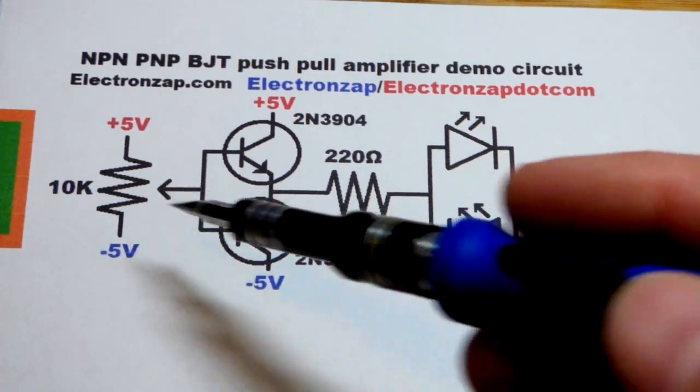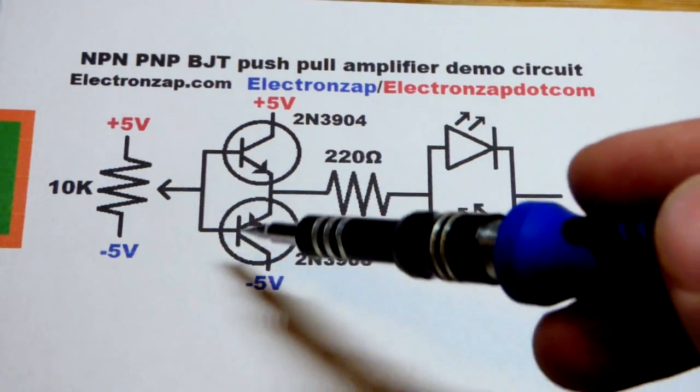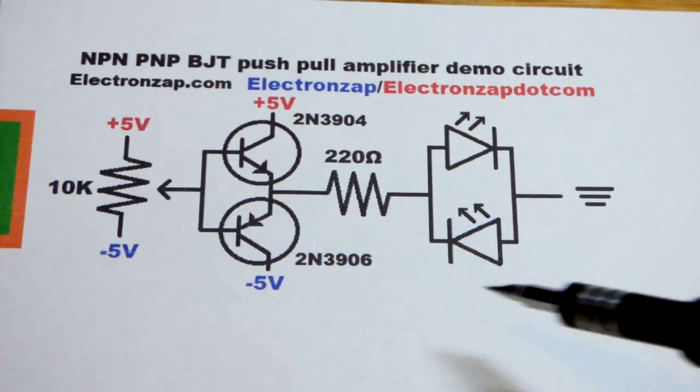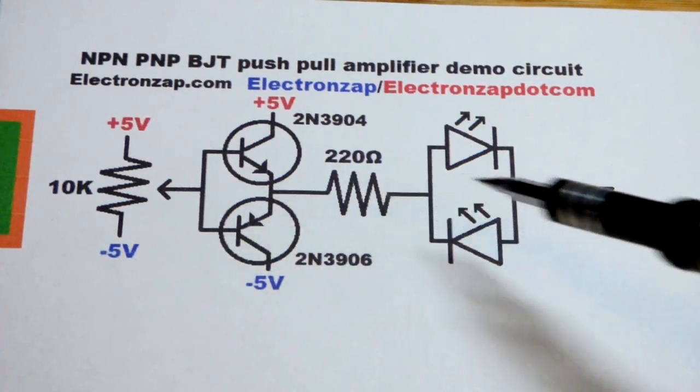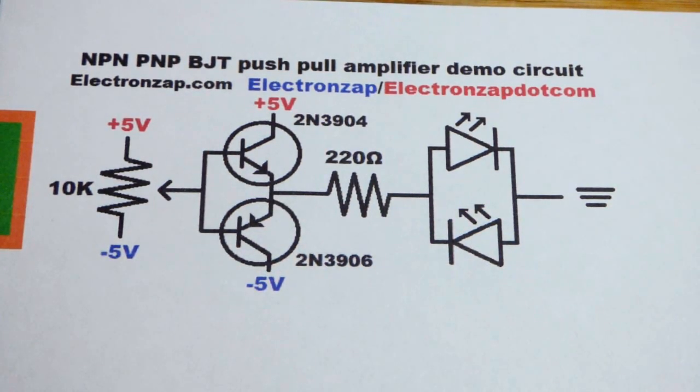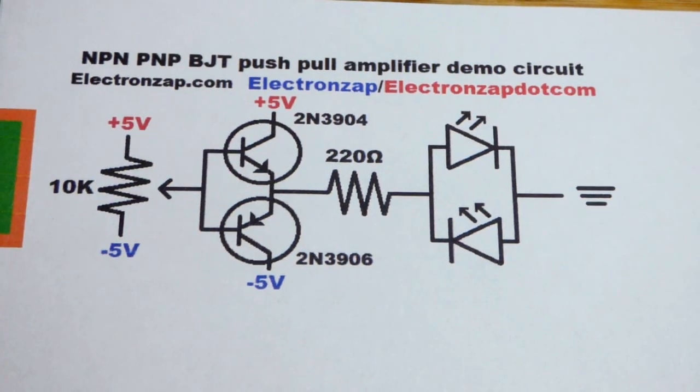When it gets more negative than the halfway point by 0.6 volts, the PNP transistor will start conducting and it will transfer that voltage again with the 0.6 volt diode difference. There's ways to improve this but this is the simple and effective version.